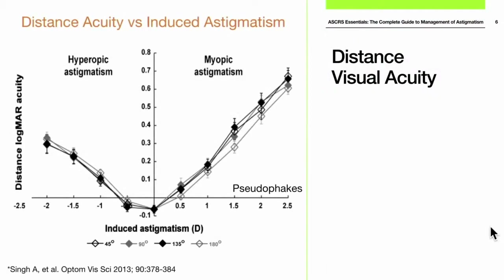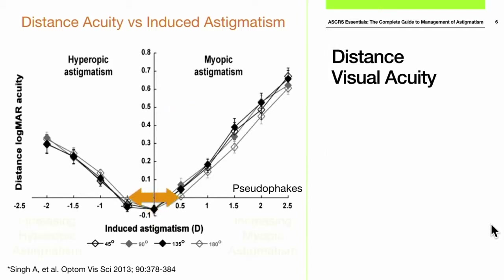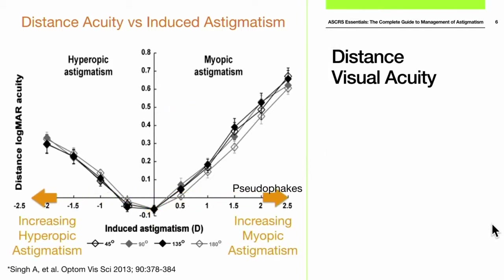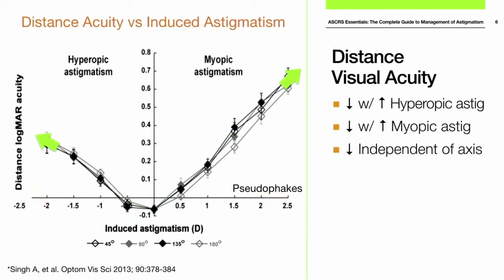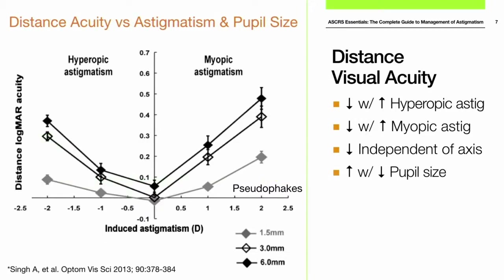Looking at distance visual acuity: on these graphs, the vertical axis is LogMAR acuity — decreasing means improving acuity. Along the X-axis, moving left increases hyperopic astigmatism and moving right increases myopic astigmatism. As we increase astigmatism in either direction, visual acuity decreases. In this study with pseudophakes, the axis did not really affect the impact on visual acuity. For maintaining 20/25 vision, we could tolerate about a diopter of hyperopic astigmatism and about three-quarters of a diopter of myopic astigmatism.